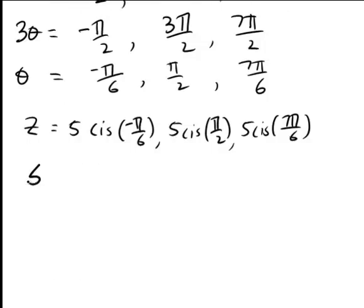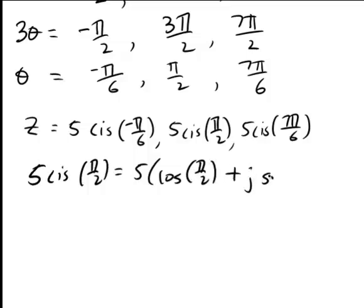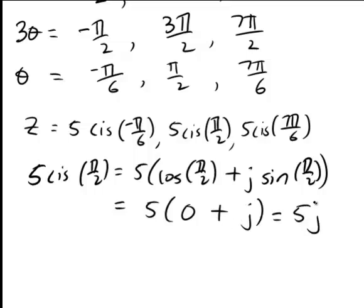Similarly the next one, 5 cis(π/2) is just going to become 5(cos(π/2) + j sin(π/2)). Now, cos(π/2) is just 0, and sin(π/2) is just 1, so that one actually just becomes 5j.